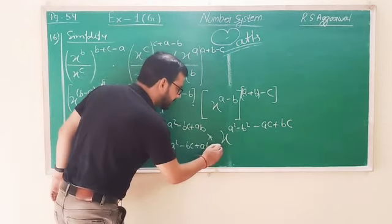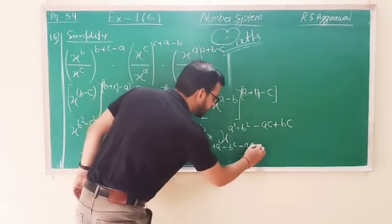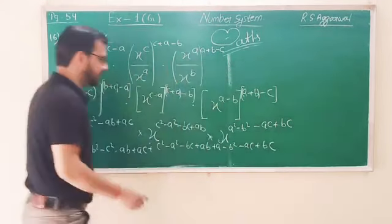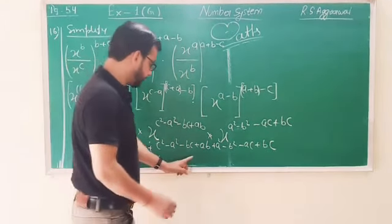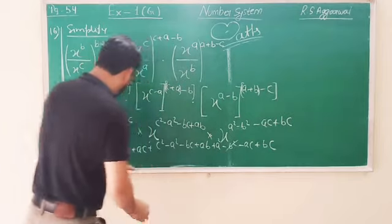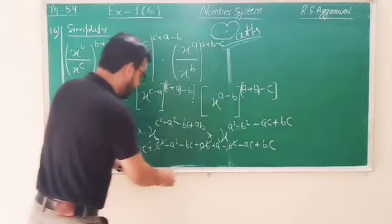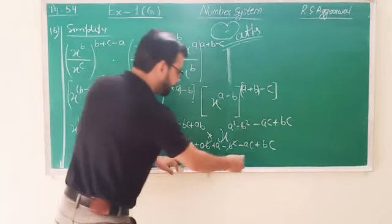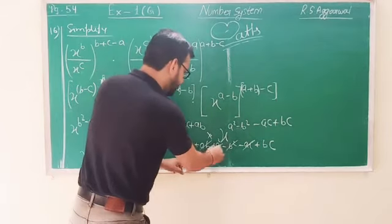Same case. C minus a multiply c plus a gives c square minus a square. Now c minus a multiply by minus b gives bc. Minus minus plus and value will be b square. Next is a minus b multiply a plus b gives x to the power a square minus b square. Now...